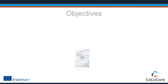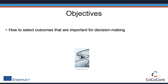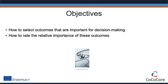This slidecast has two objectives. First, it will discuss how guideline developers can select a list of outcomes that are relevant for decision-making. Second, it will describe how the relative importance of outcomes can be determined.